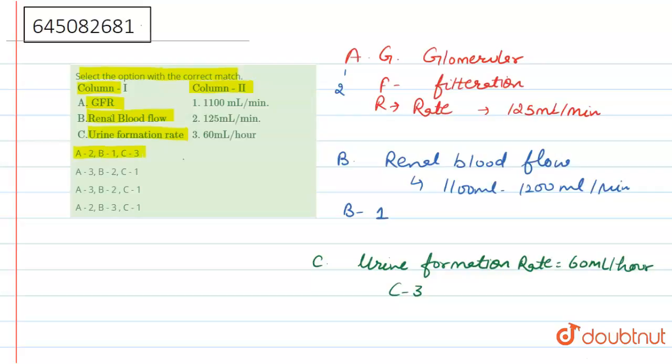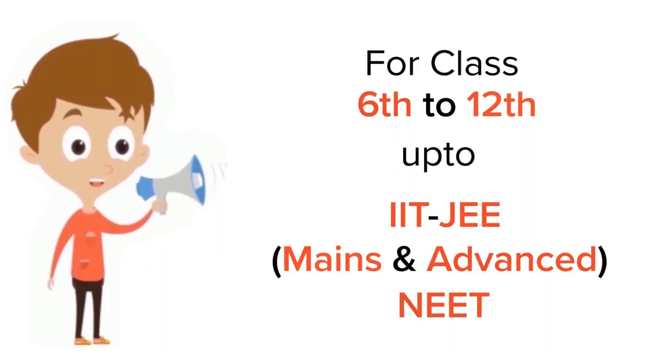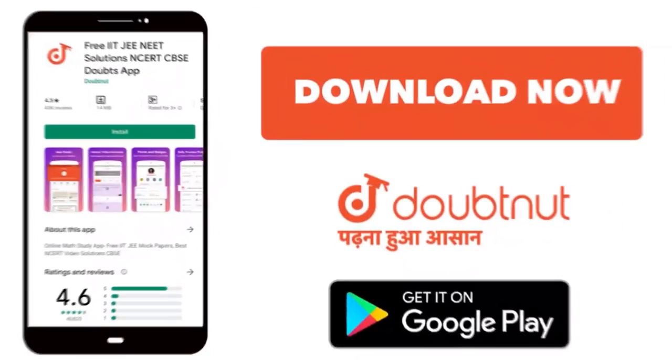So the right answer is option first, where A is second, B is first, and C is third. Hope this answers your question. Thank you. For class 6-12, IIT-JEE, and NEET level, trusted by more than 5 crore students, download Doubtnet app today.